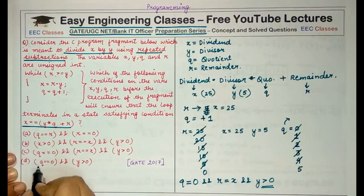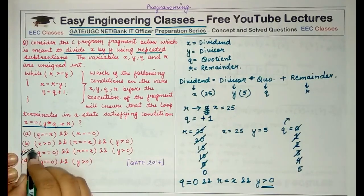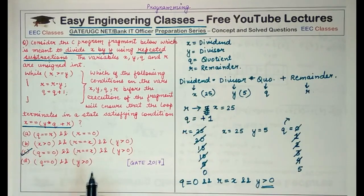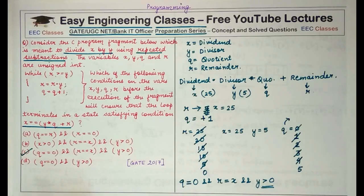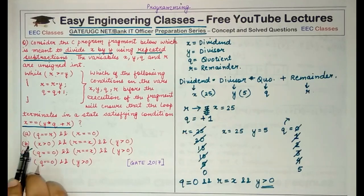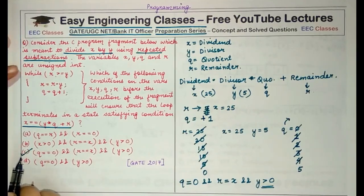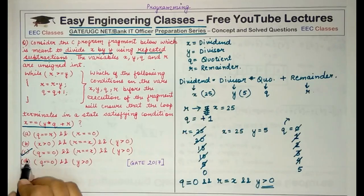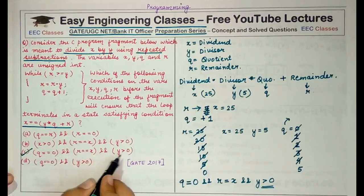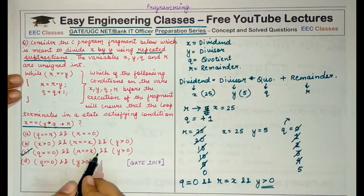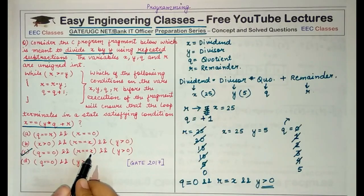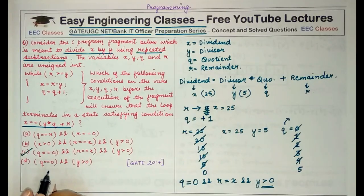So if you see all these four options, option C is the best suitable answer that represents the conditions that you must ensure before the running of this while loop. This is the initializations and conditions you must check before performing these repeated subtractions to perform the division of X by Y.